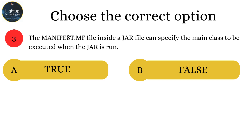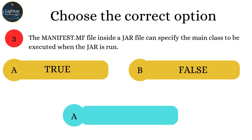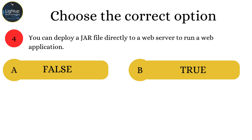The manifest.mf file inside a JAR file can specify the main class to be executed when the JAR is run. You can deploy a JAR file directly to a web server to run a web application.